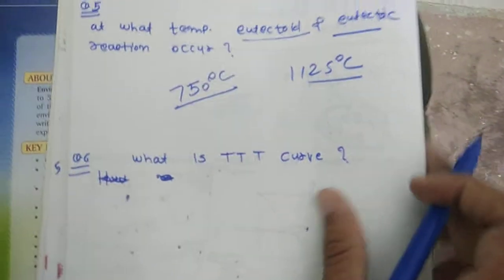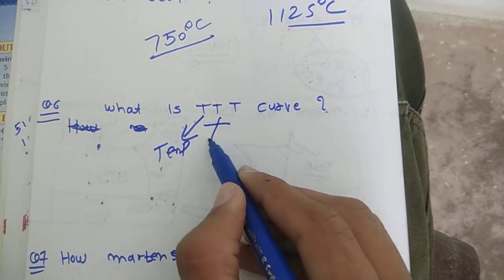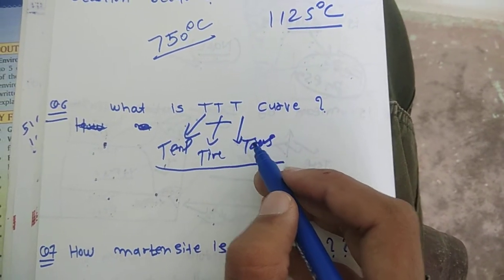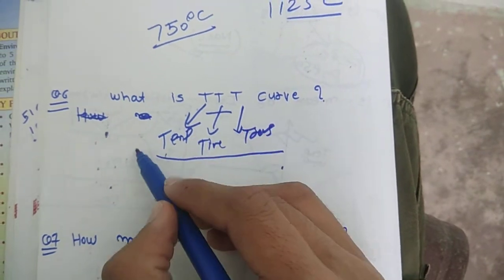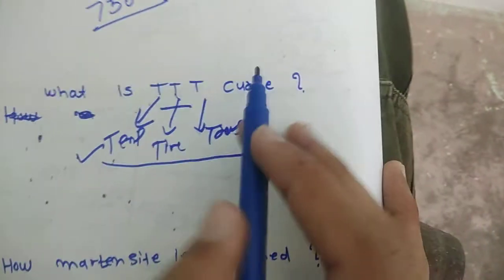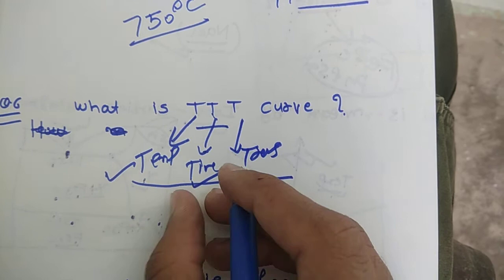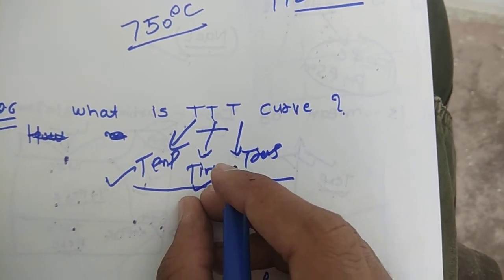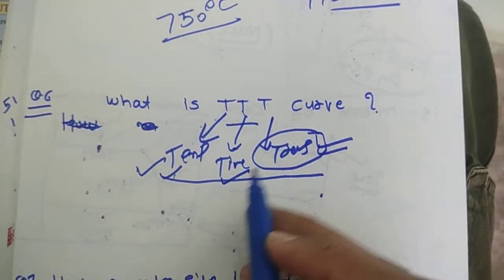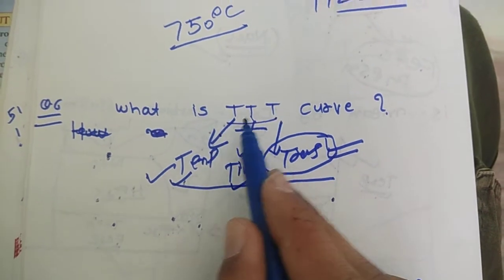The sixth question: what is the TTT curve? TTT stands for Temperature, Time, and Transformation. The main difference between the TTT curve and the iron-carbon diagram is that in the iron-carbon diagram we only change temperature and percentage of carbon, but in the TTT curve we also change time — by keeping your mixture for a period of time, you observe different phase transformations of iron. The TTT curve is where we obtain the martensite phase.